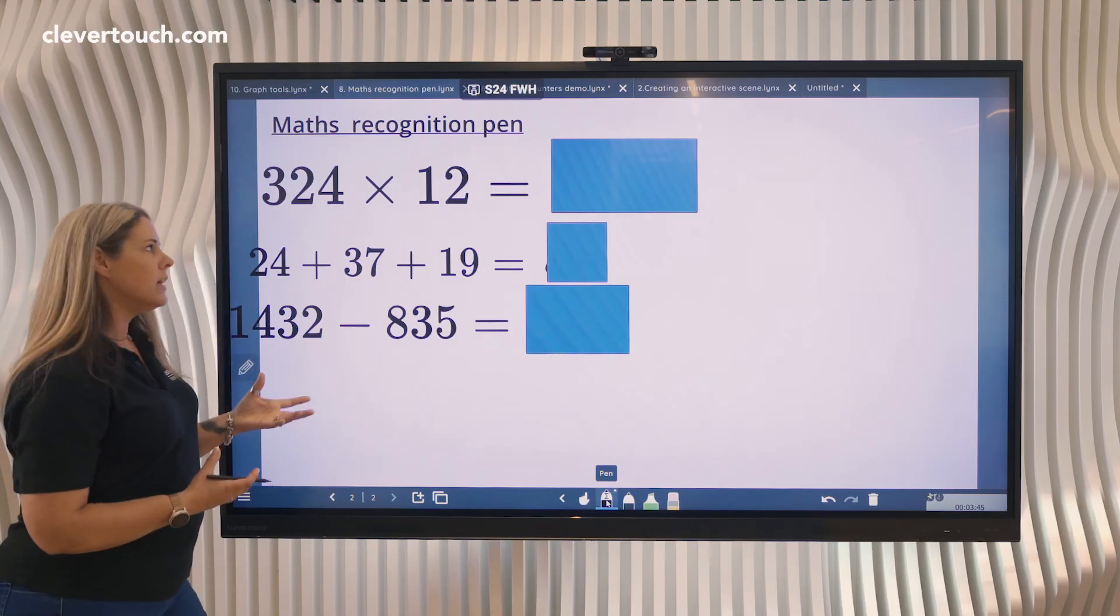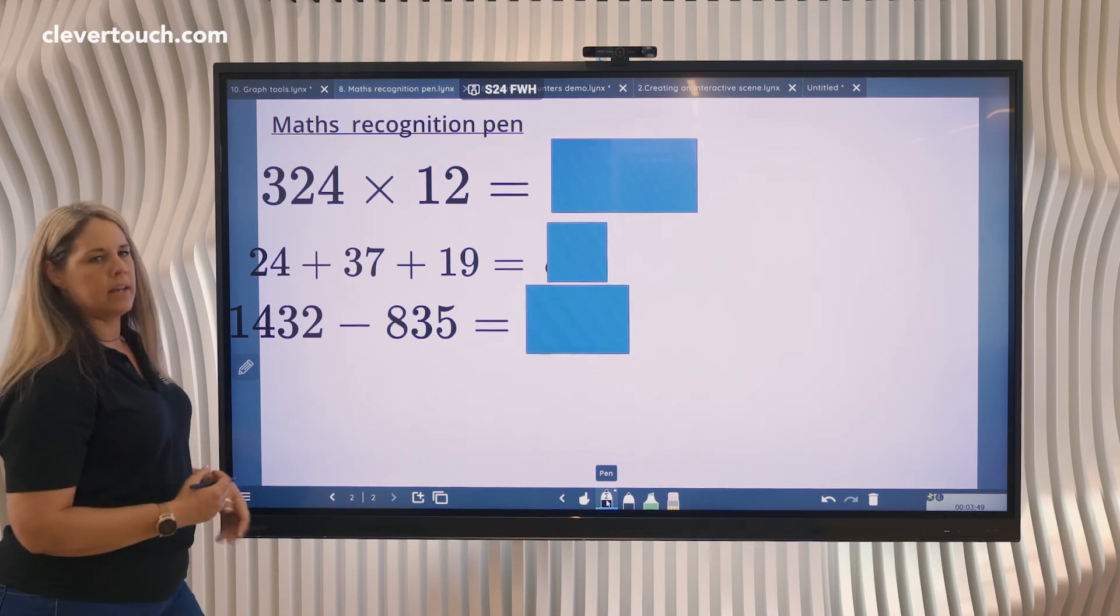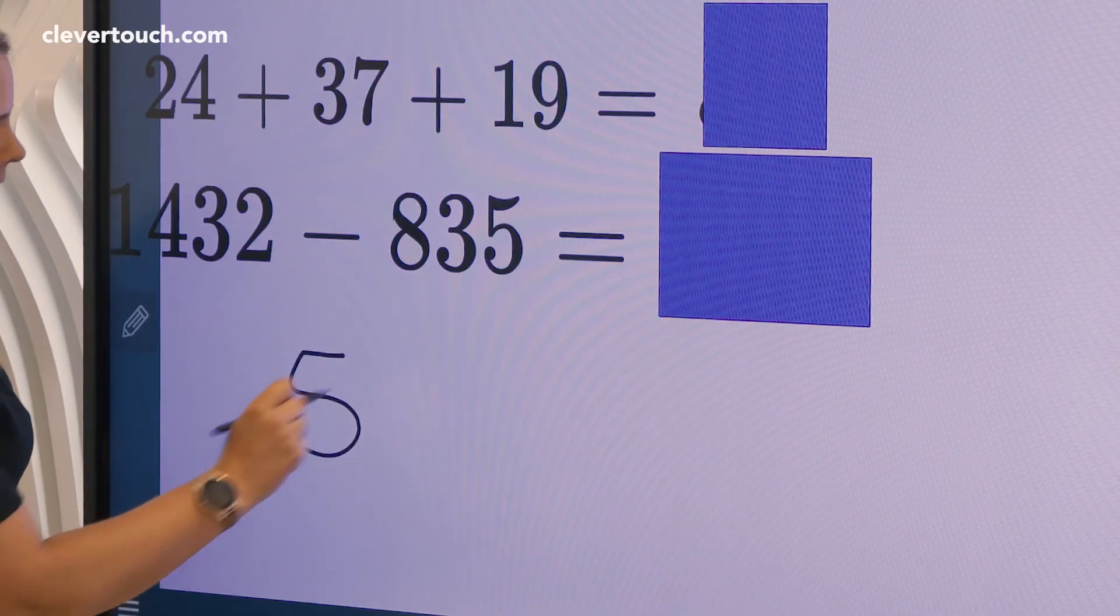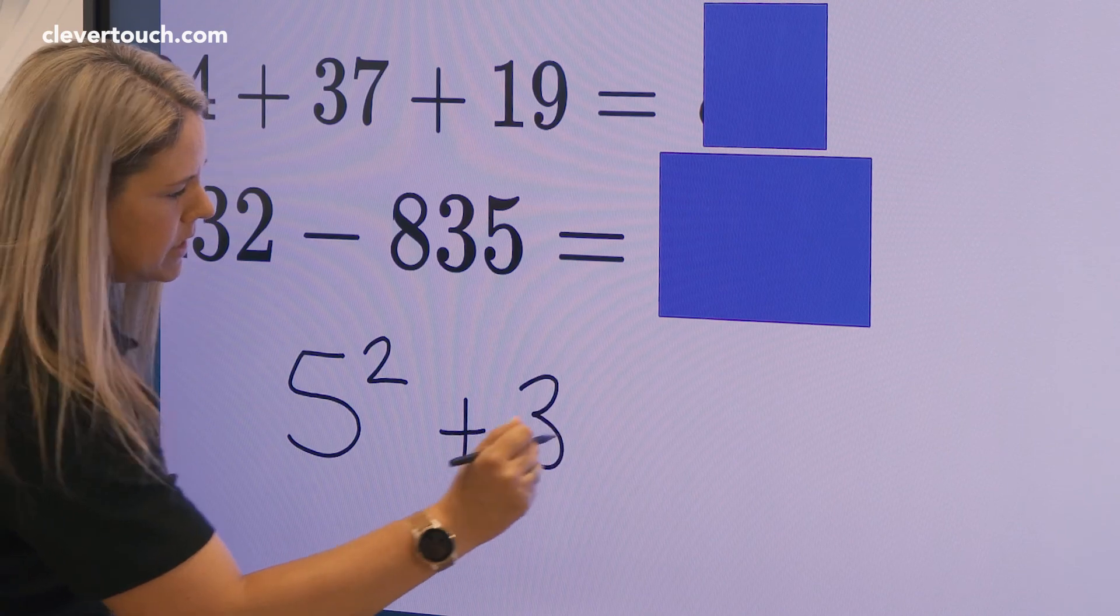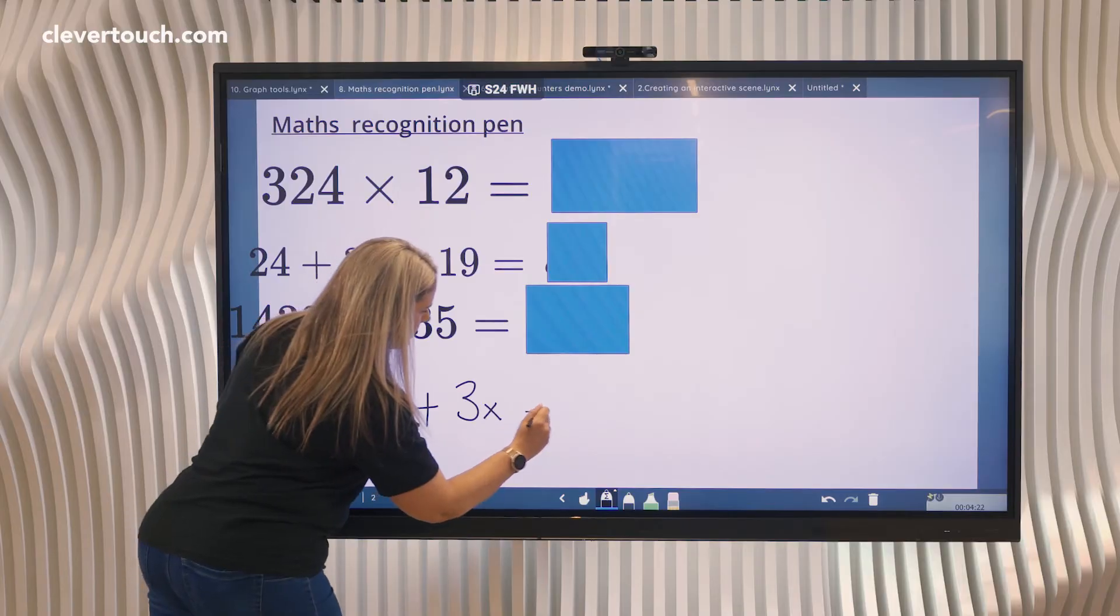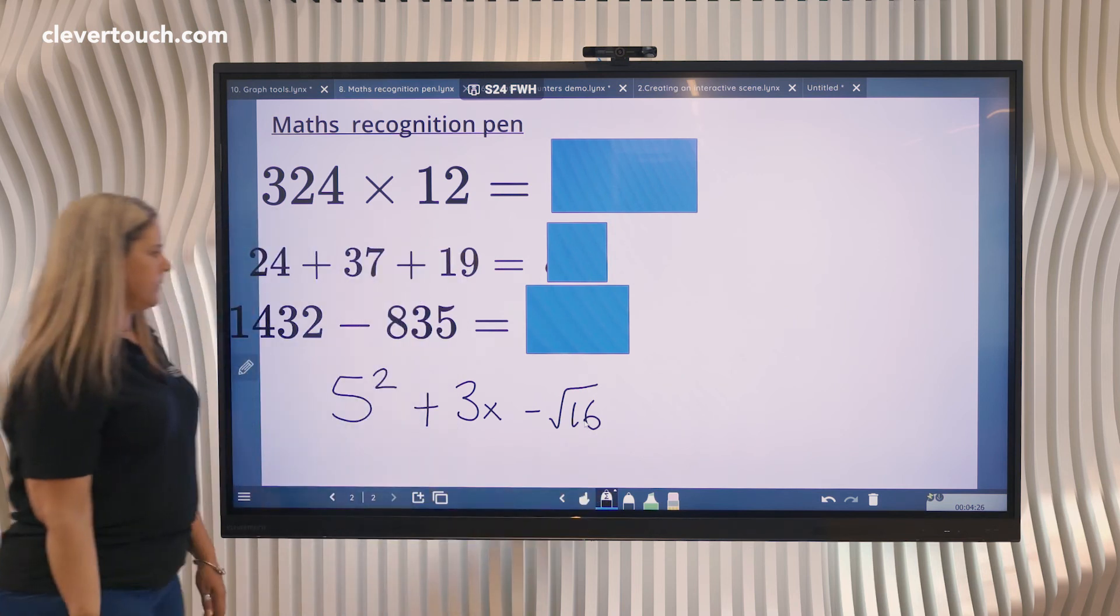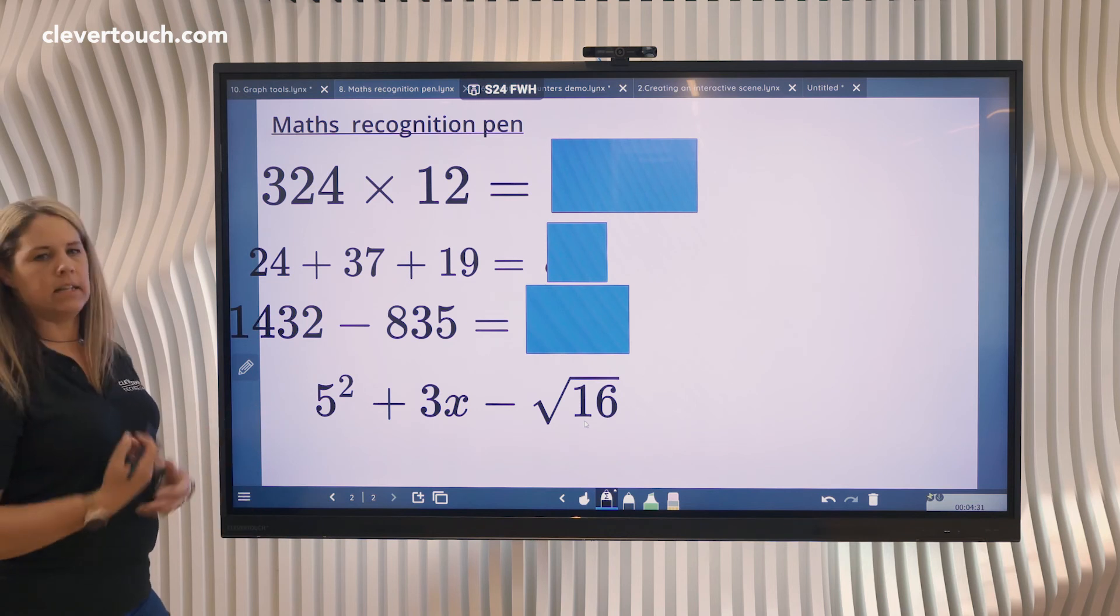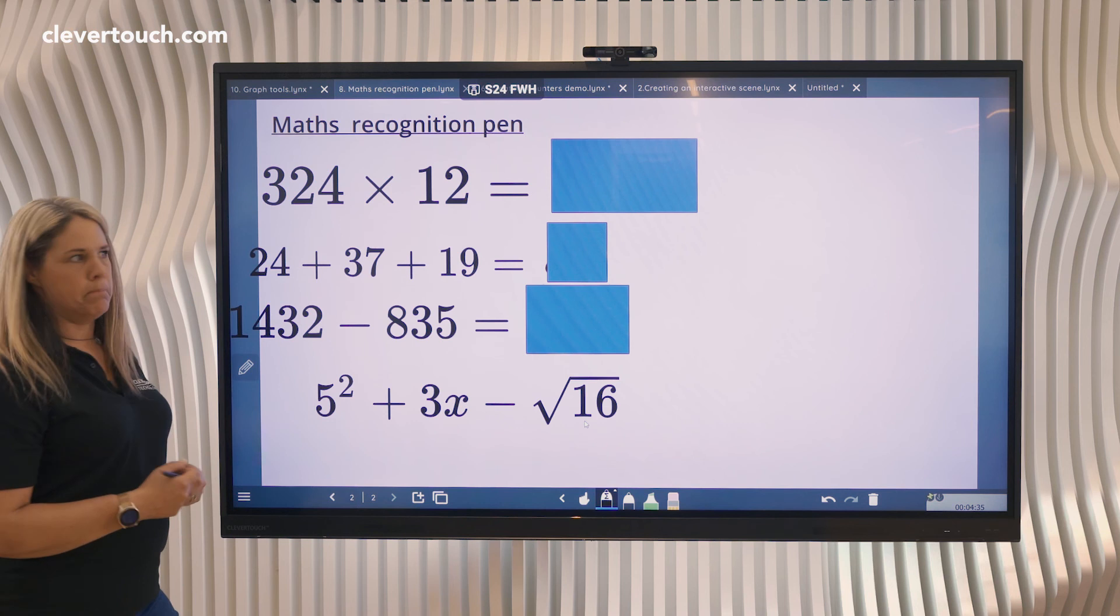Although it won't calculate the answer for you when you're doing equations, it will recognize a lot of the symbols. For example, 5 squared add 3x take away square root 16. It will show those as well, so it recognizes them. It won't calculate the answer for you, but it does understand those symbols.